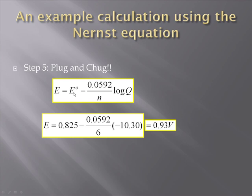Qualitatively, if the two half cells were under standard conditions we would have a cell voltage of positive 0.85 volts. But under the conditions in this question it becomes positive 0.93 volts — the voltage is actually a little bit higher than standard conditions. Now you understand where the Nernst equation comes from and we've walked through a sample application. Hopefully this is helpful in your learning and use of the Nernst equation for your homework problems. Thanks for watching.